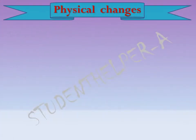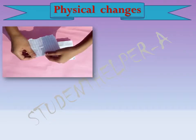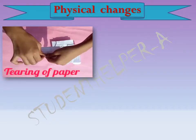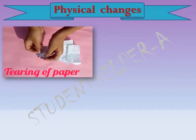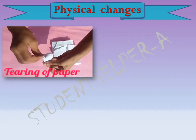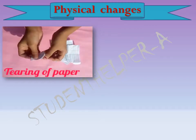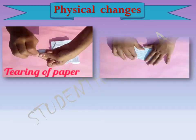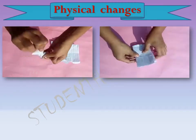Physical changes. Such a change in which the nature and identity of the participating substances do not change is called a physical change. For example, tearing of paper — the nature of the paper remains the same before and after the rupture, there is no change in it. Second example: folding of paper.